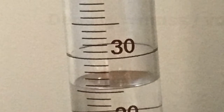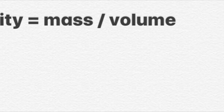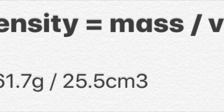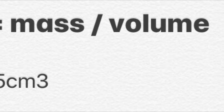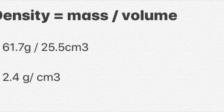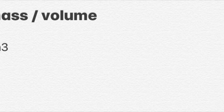Here's our measuring cylinder. If you look closely, the value is 25.5 centimetres cubed. So again, we use our equation: density equals mass divided by volume. The numbers were 61.7 grams and 25.5 centimetres cubed. So 61.7 divided by 25.5 gives us a density of the stone of 2.4 grams per centimetre cubed.